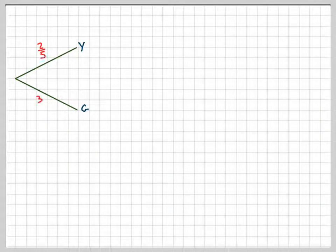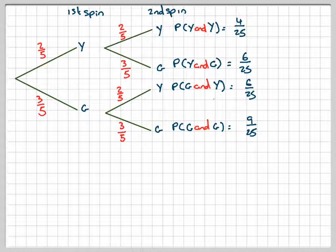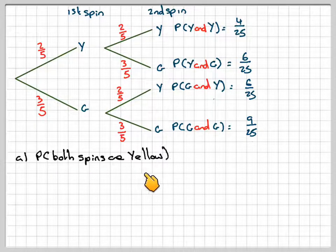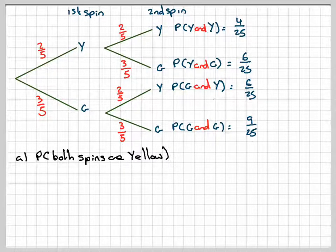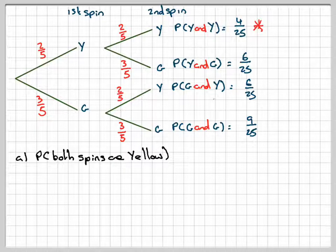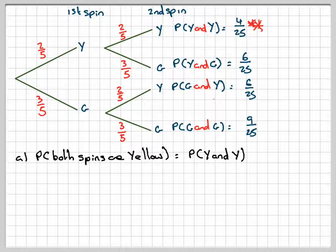So now we can use the tree diagram to answer the questions. The first question: the probability that both spins are yellow. If both spins are yellow, that's this branch here — yellow and yellow — which is equal to four out of 25.